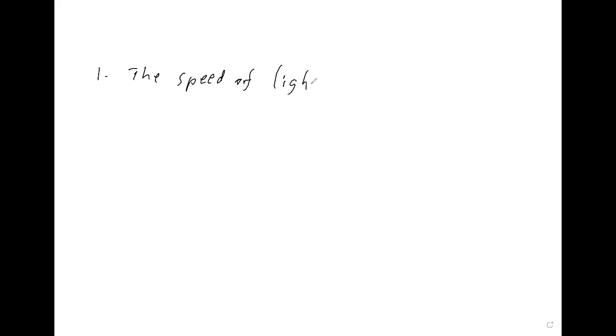Basically everything in this theory of relativity can be derived from two postulates. The first of these postulates is that the speed of light always has the same value in every inertial frame.